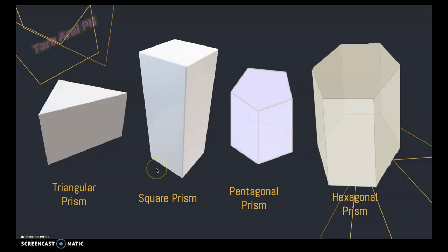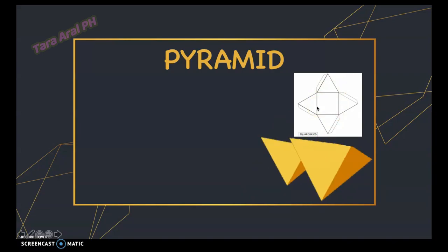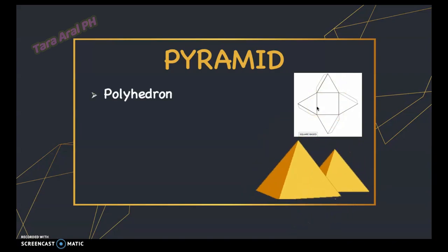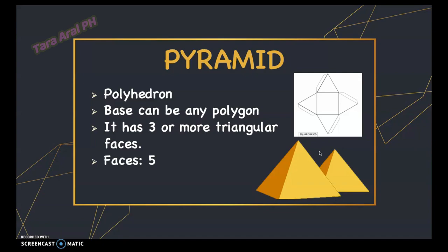Next is pyramid. A pyramid is a polyhedron and the base can be any polygon. It has a single base and a common vertex where edges and faces meet, which is why the faces are always triangles. The name of the pyramid is based on its base. The number of sides of the base is the same as the number of triangular faces. This kind of pyramid shown here is a square pyramid — it has five faces, five vertices, and eight edges, since the base is a square.